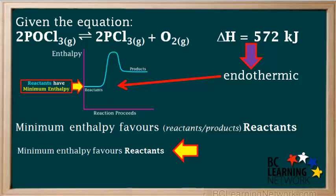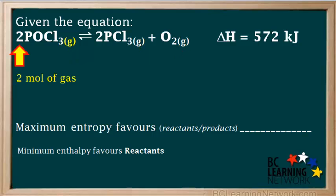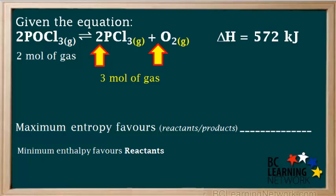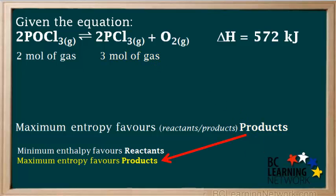The next question is whether maximum entropy favors reactants or products. To answer this, we look for gases in the equation. We see that there are two moles of gas on the reactant side and three moles of gas on the product side. We can say that maximum entropy favors the side with a greater number of moles of gas, which is the products in this case.